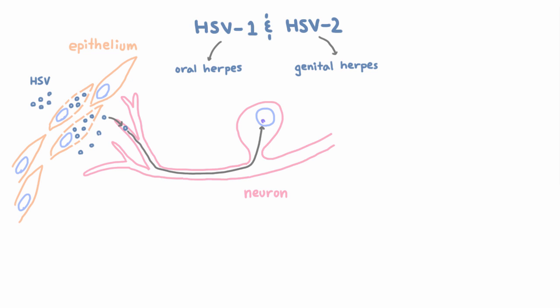Then, at some point, the latent virus in some neuron reactivates and active replication starts again — and we don't really understand the reasons why. Virions are then transported back in an anterograde fashion to the mucosal or cutaneous sites, and once again the virus infects epithelial cells and lesions form again. This is what we call the reactivated or recurrent infection.